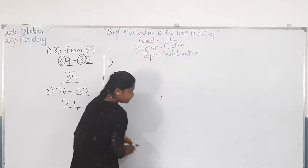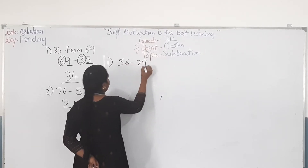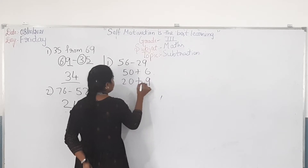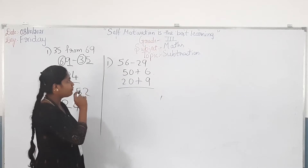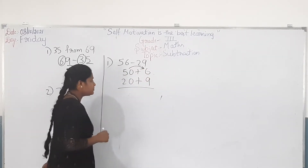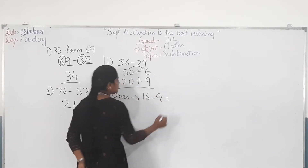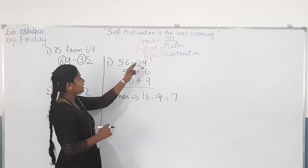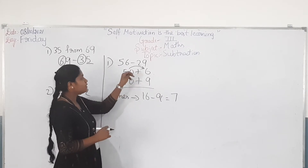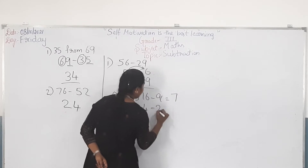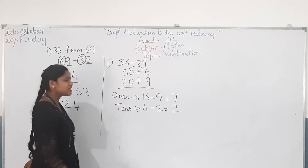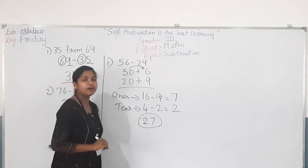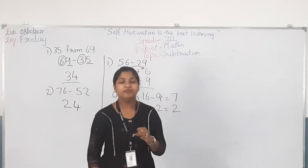Now solve 56 minus 29. First, split it: 50 plus 6 and 20 plus 9. Since 6 is less than 9, you take 1 from the tens place as a borrow. That becomes 16 minus 9, which is 7. Then the tens place becomes 40 minus 20, so 4 minus 2 is 2. Write the tens place number first: 2 and 7. The answer is 27. This is how we do subtraction of two-digit numbers with and without regrouping.